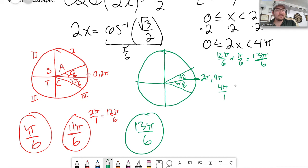So, 4π over 1, if I multiply by 6, that would be 24π over 6. And then I want to add 1 to that, so let me draw an arrow here, because that's not the same thing as that anymore. Add 1π over 6. Sorry, subtract 1π over 6. I already added 1 earlier.